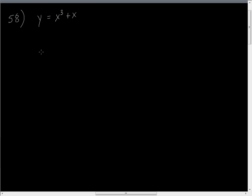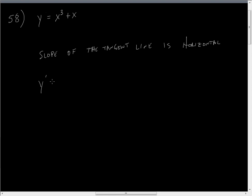So if we want to know when the slope of the tangent line is horizontal — the derivative y prime is the slope of the tangent line. It's horizontal, so that means y prime is equal to zero. So first things first: we've got to find y prime.